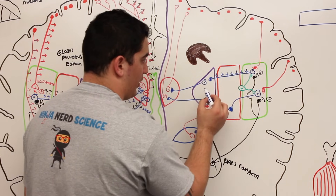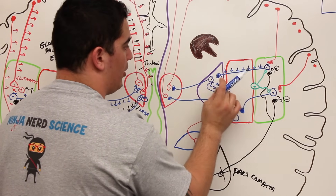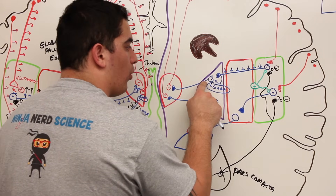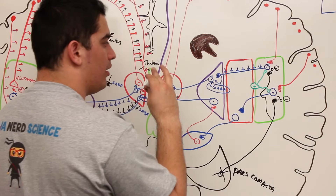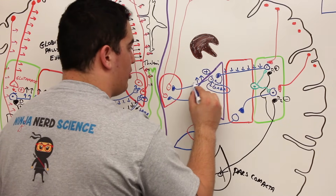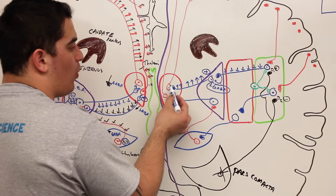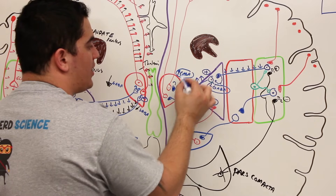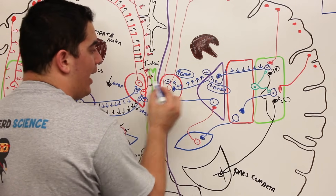With fewer action potentials, there will be less GABA being released. If there's less GABA, there's less inhibitory input — less inhibitory post-synaptic potentials — on that neuron. If there's less inhibition, it releases that neuron from inhibition and stimulates it, so the globus pallidus internus will have increasing action potentials progressing toward the thalamus, releasing a lot of GABA.